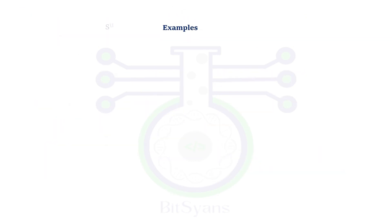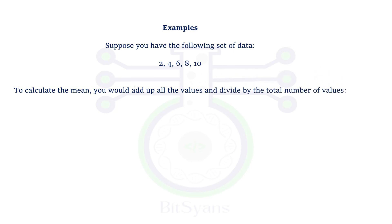Now, let's check one example. Suppose you have a following data set of 2, 4, 6, 8, 10. In order to calculate the mean, you would add up all the values and divide by the total number of values. That is going to be your 2 plus 4 plus 6 plus 8 plus 10 by 5 equals to 6. Therefore, the mean of this data set is 6.